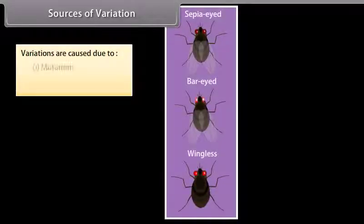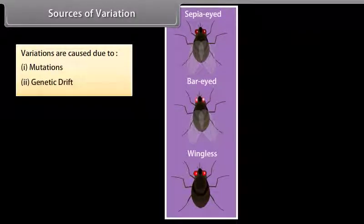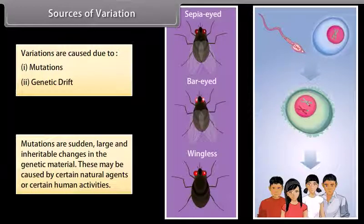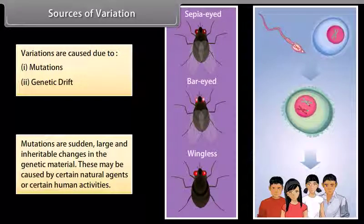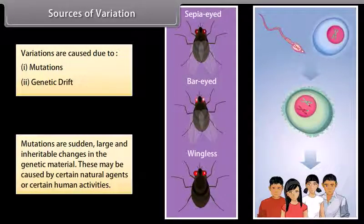Sources of variation: Variations are caused due to mutations and genetic drift. Mutations are sudden, large, and inheritable changes in the genetic material. These may be caused by certain natural agents or certain human activities.